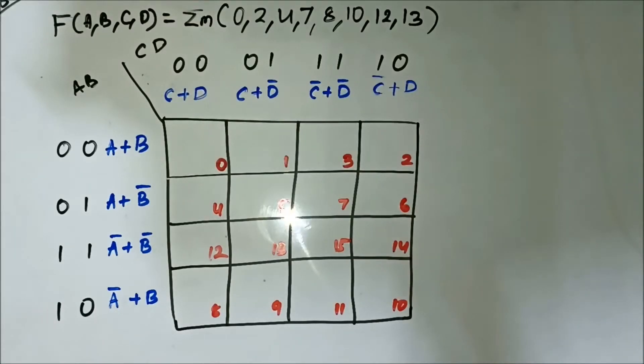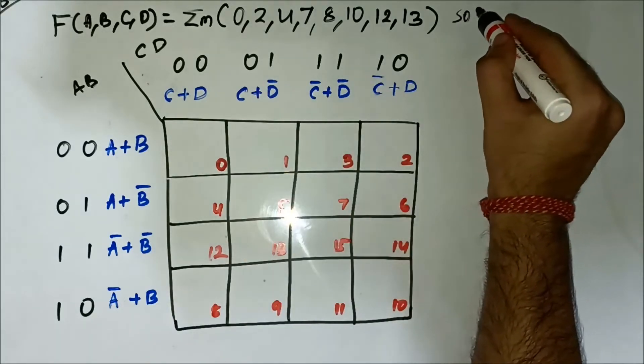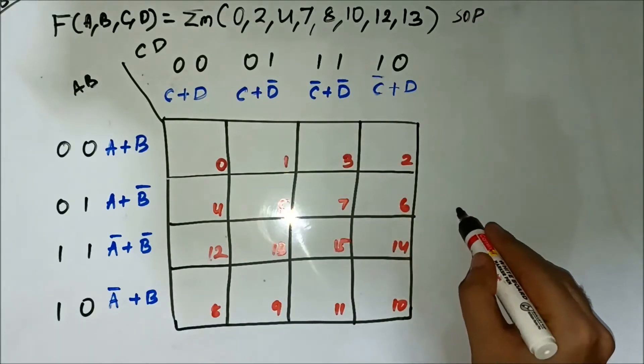This is the 8th question related to simplifying SOP expressions using POS K-map. We have this SOP expression given in terms of the minterm values.